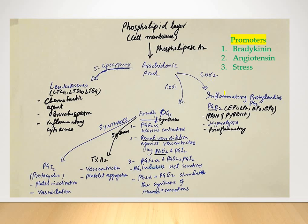Cyclooxygenase-2 will produce inflammatory prostaglandins, which produce pain and pyrexia, hyperalgesia, and synthesis of pro-inflammatory mediators. Cyclooxygenase-1, on the other hand, produces friendly prostaglandins — for example, PGF2 alpha helps in uterine contraction.